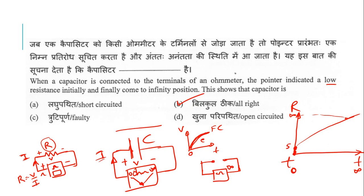If the reading is faulty — meaning the resistance stays at zero and goes from zero to zero — that indicates the capacitor is in an open-circuit fault condition from the start. A resistance of zero straight through indicates a faulty capacitor.